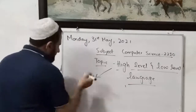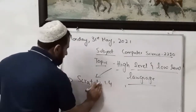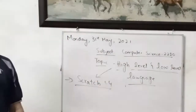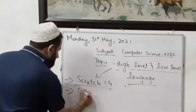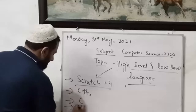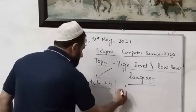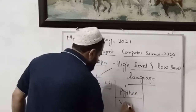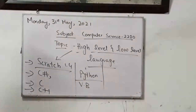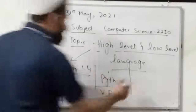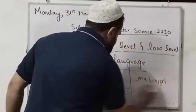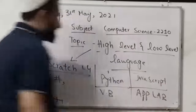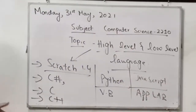The first example is Scratch — Scratch 1.4 and Scratch 2.0. The second one is C Sharp. Then we have C language, then C++. I am also teaching Python language, VB (Visual Basic), JavaScript, and App Lab, which is for mobile applications. These are all examples of high level languages.